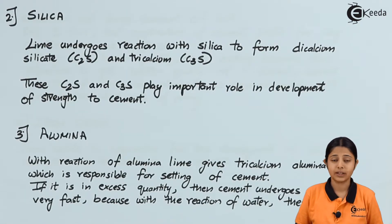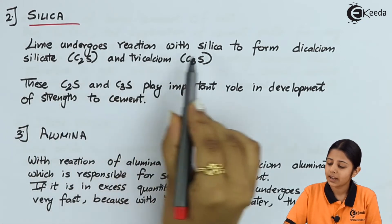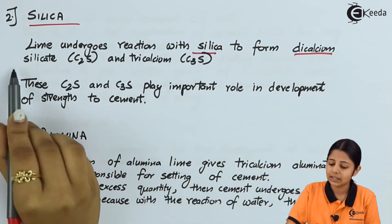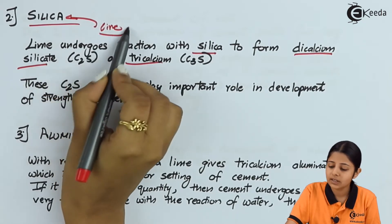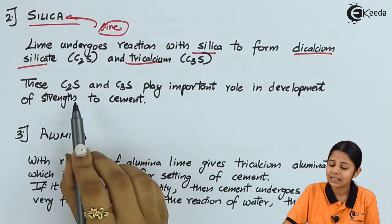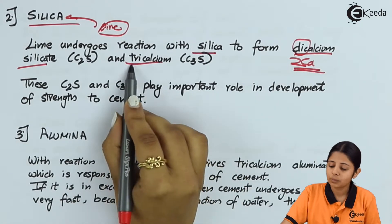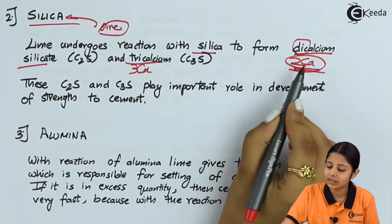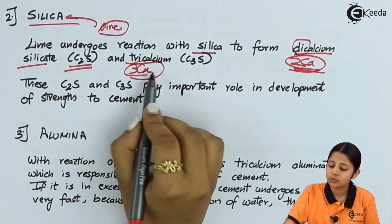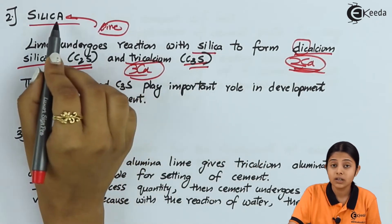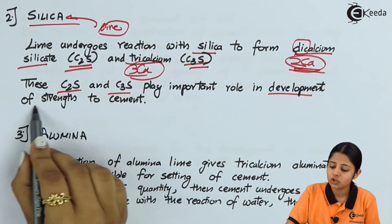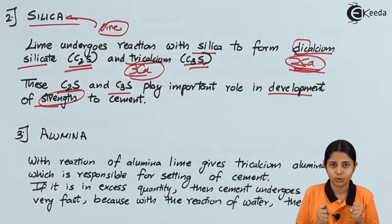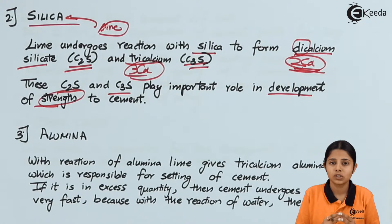The second and most important ingredient after Lime is silica. Lime undergoes reaction with silica to form dicalcium silicate (C2S) and tricalcium silicate (C3S). Dicalcium means 2 calciums with silica, and tricalcium means 3 calciums with silica. Both C2S and C3S play an important role in the development of strength of cement. Lime itself will not give good strength to cement, but when Lime is mixed with silica forming dicalcium or tricalcium silicate, both together give good strength to the cement.